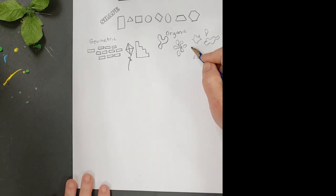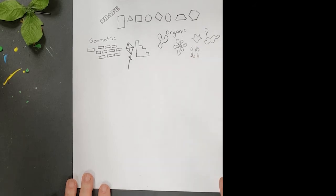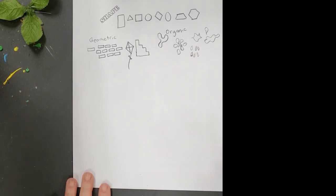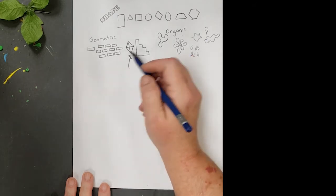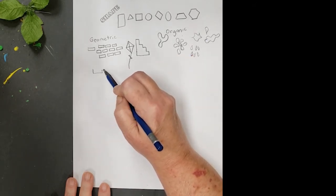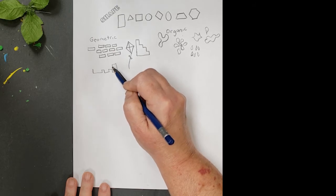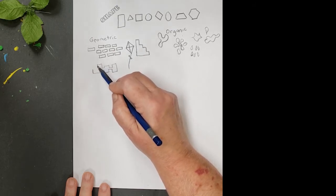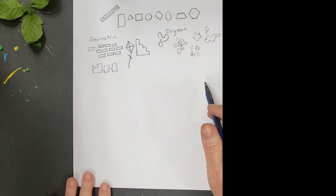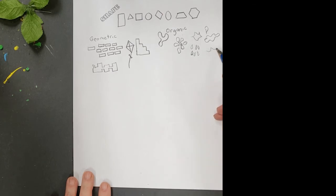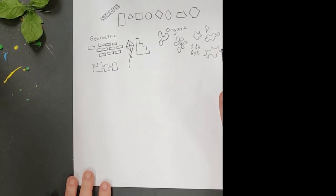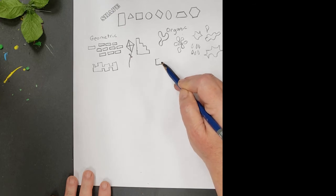Raindrops would be organic. Can y'all think of anything else that would be an organic shape? Let's see, I'm going to go back over here underneath the geometric, and just do some geometric shapes that are not usual. You know, they're not one of those basic shapes. It's just something I created, but it's geometric and can be remade over and over.